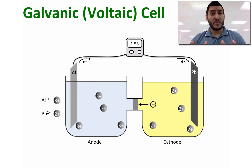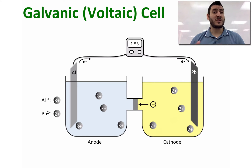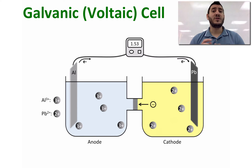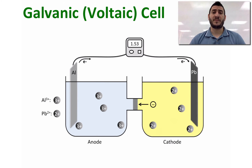The salt bridge can be substituted by a porous disc. The porous disc allows the extra negative ions in the cathode to transfer to the anode, and in this way the two compartments also remain neutral at all times.